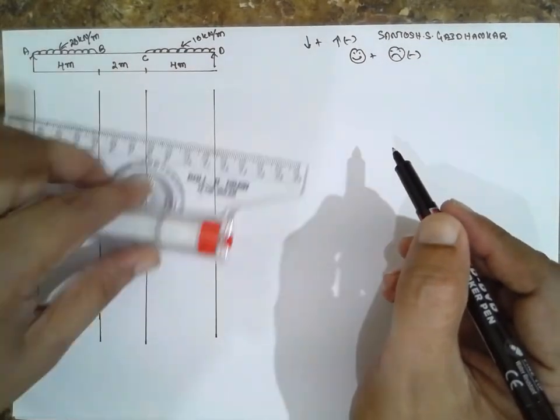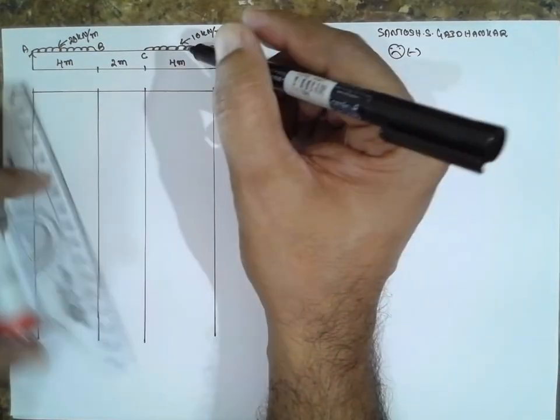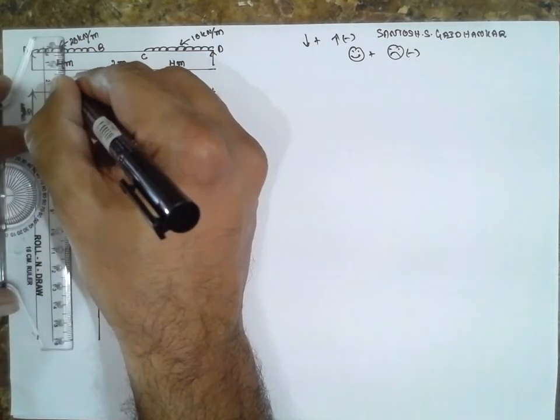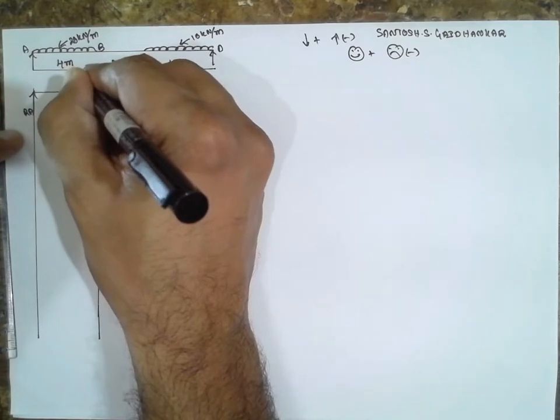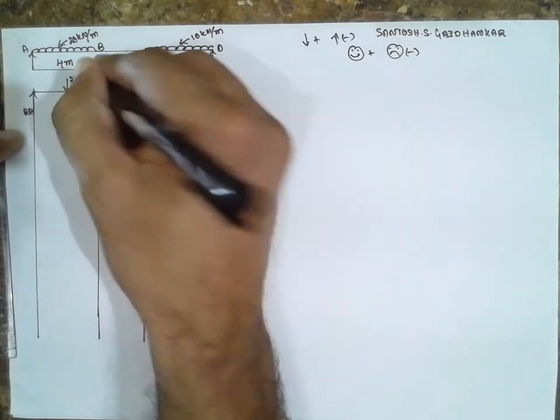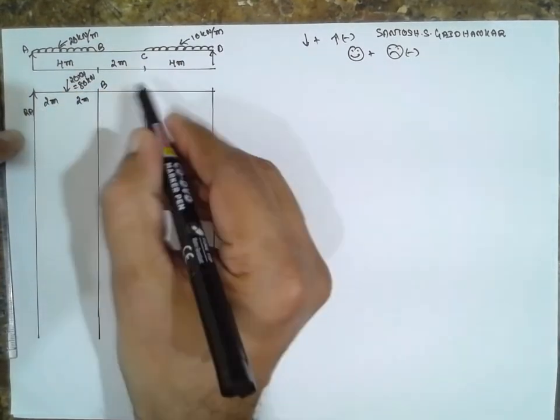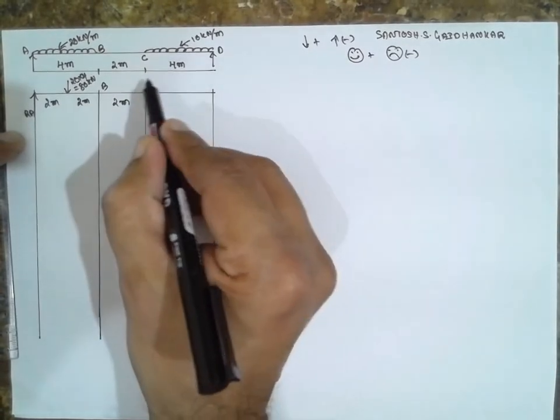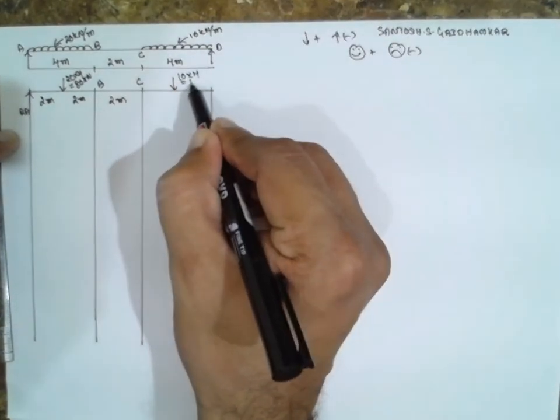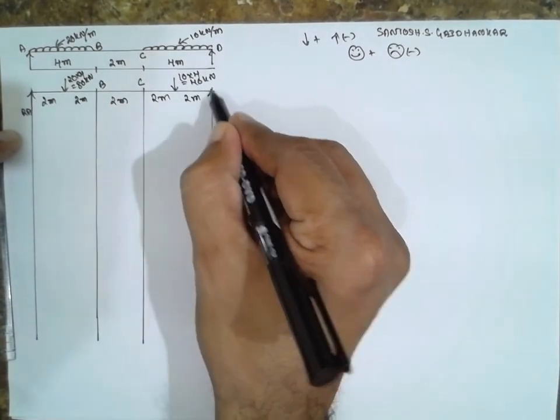There is no couple here. First I will convert it into a point load. This is RA and UDL is converted into point load, that is 20 x 4. It will be 80 kN at B, 2 m this side, 2 m this side, 2 m, this is C.